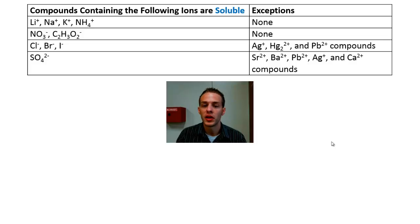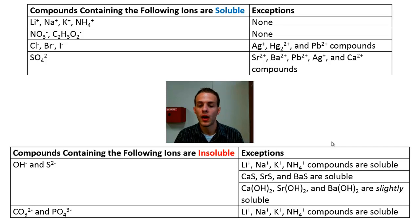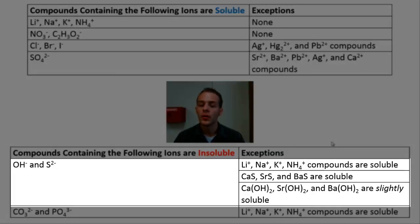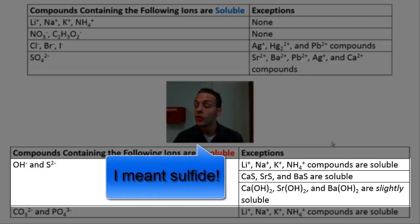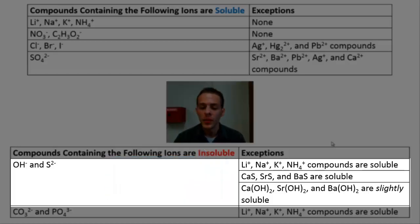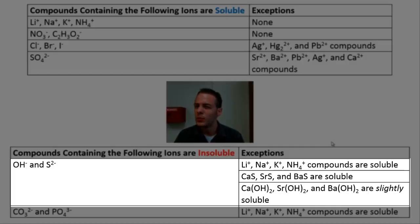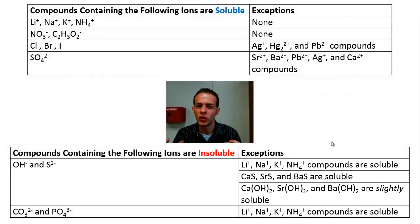Now let's talk about compounds that are generally insoluble. Hydroxides and sulfides are generally insoluble, however there are exceptions: if paired with lithium, sodium, potassium, or ammonium ion, they will be soluble. If the sulfide ion pairs with calcium, strontium, or barium ion, those sulfides are also soluble. If the hydroxide ion pairs with calcium, strontium, or barium, those compounds are slightly soluble — not quite insoluble, not quite soluble, reflecting that solubility is a continuum.